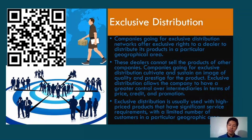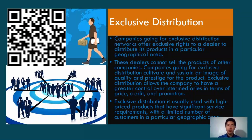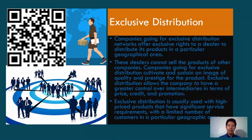Exclusive distribution networks offer exclusive rights to a dealer to distribute a product in a particular geographic area. These dealers cannot sell the products of other companies. Companies going for exclusive distribution cultivate and sustain an image of quality and prestige, and have greater control over intermediaries in terms of price, credit, and promotions. It is usually used with high-price products that have significant service requirements and limited customers. A best example is car distributorship — if you are selling Toyota, you are selling Toyota only, and you are the only company distributing Toyota in that geographic location.